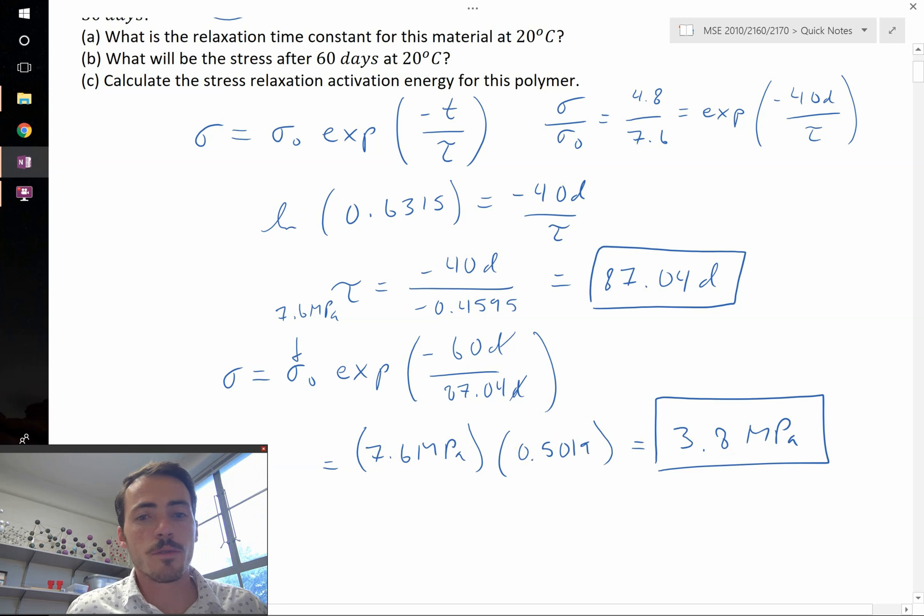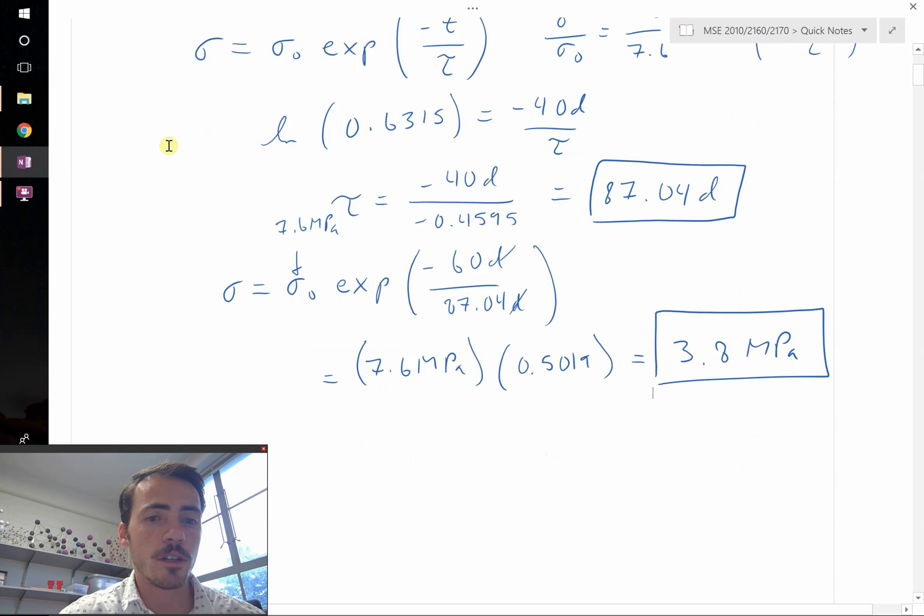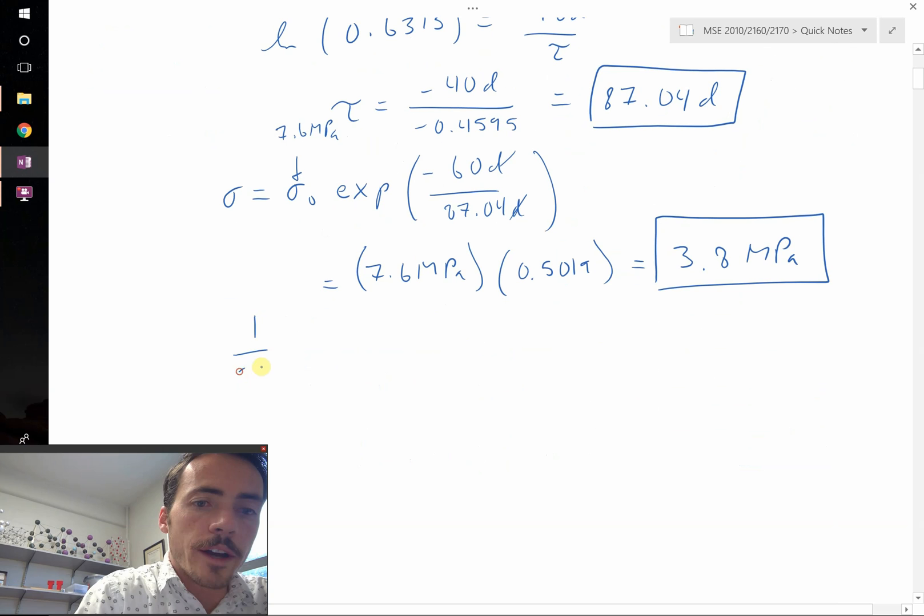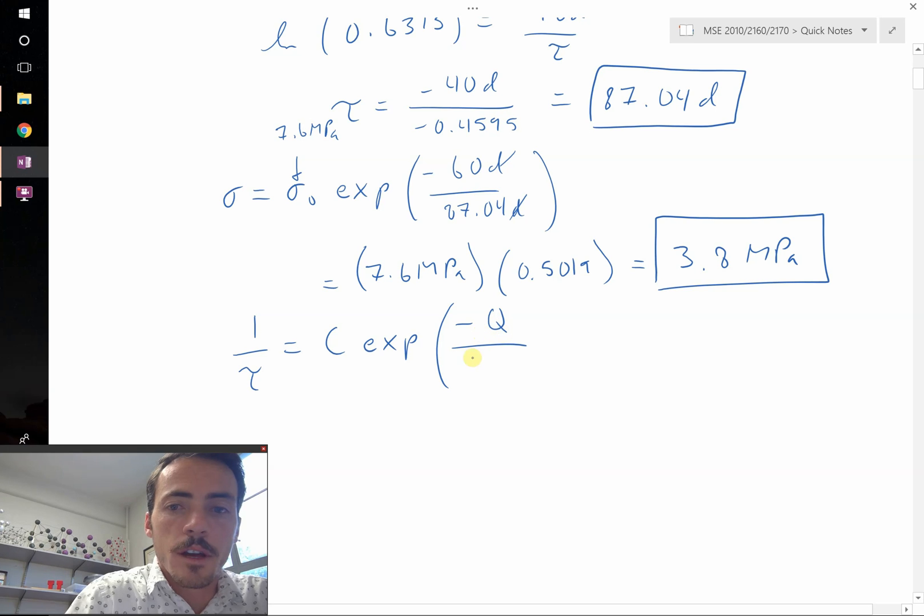Now what about part C? It says calculate the stress relaxation activation energy for this polymer. So now we need a new equation. We need to relate the stress relaxation time to an activation energy. 1 divided by tau, our relaxation time constant, is going to be equal to a pre-exponential constant C, multiplied by the exponential of an activation energy negative Q for stress relaxation, divided by thermal energy R times T, the gas constant times the temperature. Make sure that's in Kelvin.